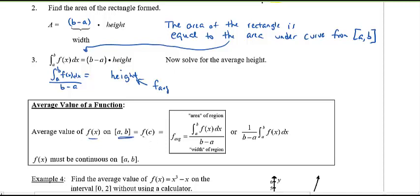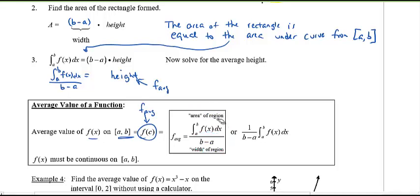This gives rise to our average value formula. The average value of f(x) on the interval from a to b is denoted f(c) or f_average, and equals the area of the region divided by the width. Some people prefer to write this as (1/(b − a)) multiplied by the definite integral — they can do that because (1/(b − a)) is a constant. Make sure f(x) is continuous on [a, b].